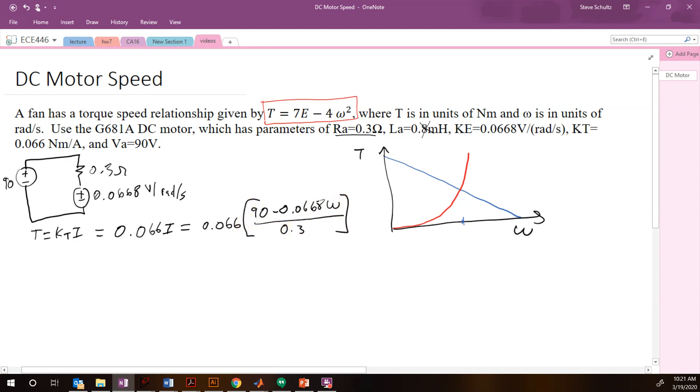So this is our torque-speed curve of our motor, and then we have our torque-speed curve of our fan. And then we just have to set these two equal. So we have 0.066 times (90 - 0.0668×ω) over 0.3 equals 7×10^-4×ω². So then we just have to solve this equation.